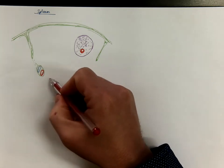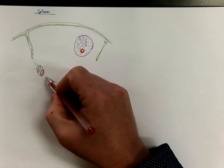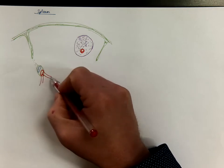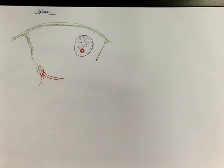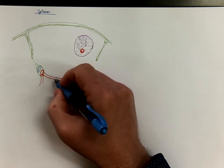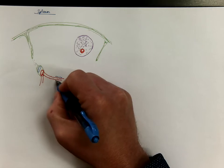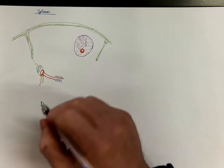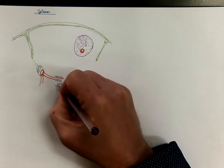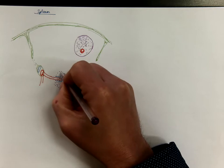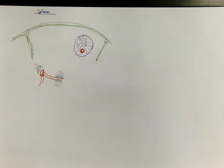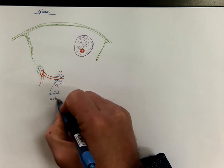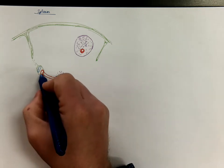Now let us follow the branching pattern of the trabecular arteries, which are branches of the splenic artery. This artery becomes surrounded by a sheath of lymphocytes — T-lymphocytes. And there is another population of B-lymphocytes. Of course they look the same in routine staining. This is called a central artery, and it's a branch of a trabecular artery.